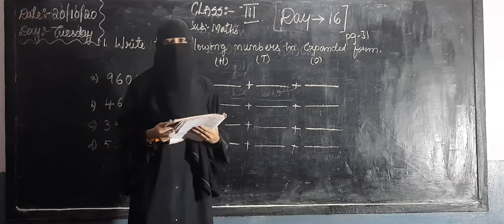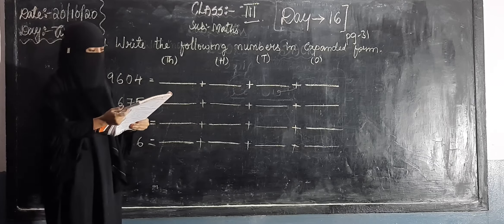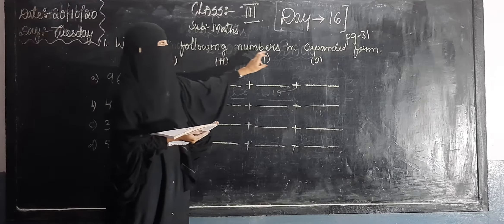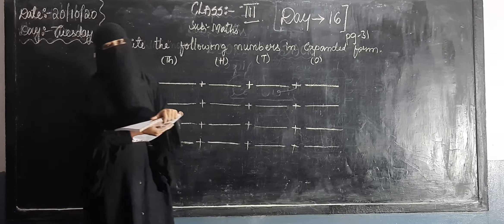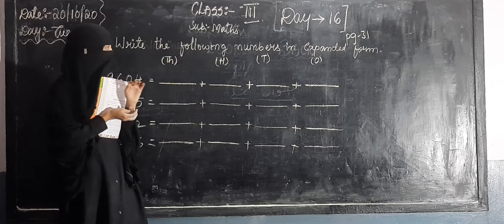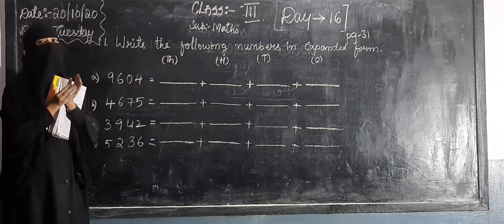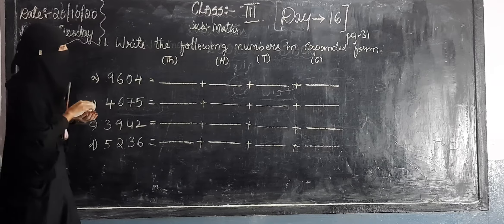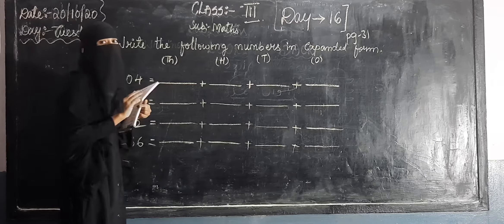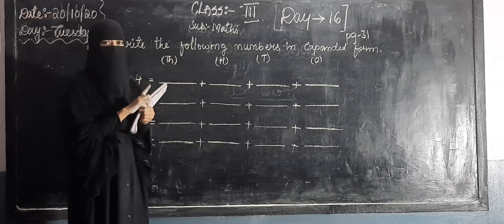Today's topic is Expanded Form and Standard Form. So, first question — take out page number 31 kids. Write the following numbers in Expanded Form. Expanded Form is nothing but we have to separate the numbers according to their position. You have to expand and separate it. Look at ones, tens, hundreds, thousands. It is your reader work — no need to write in your class work.